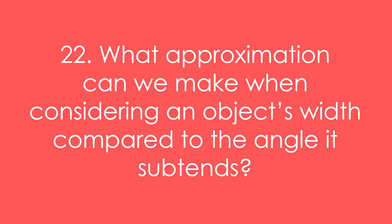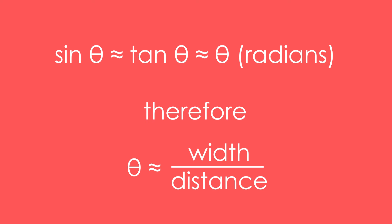Question 22: What approximation can we make about an object's width compared to the angle that it subtends when we look at it through a telescope? If we're dealing with radians, we can say that sine theta is basically equal to tan theta, which is actually basically equal to theta itself. Therefore we can say that theta is equal to the actual width of the object divided by the distance it is from us.